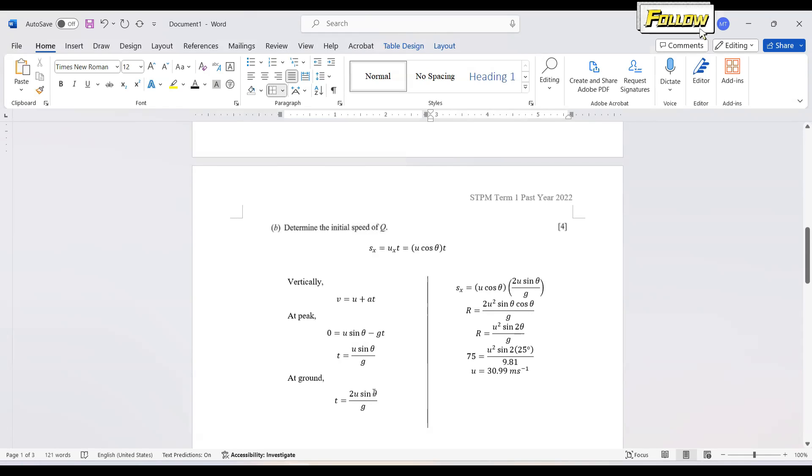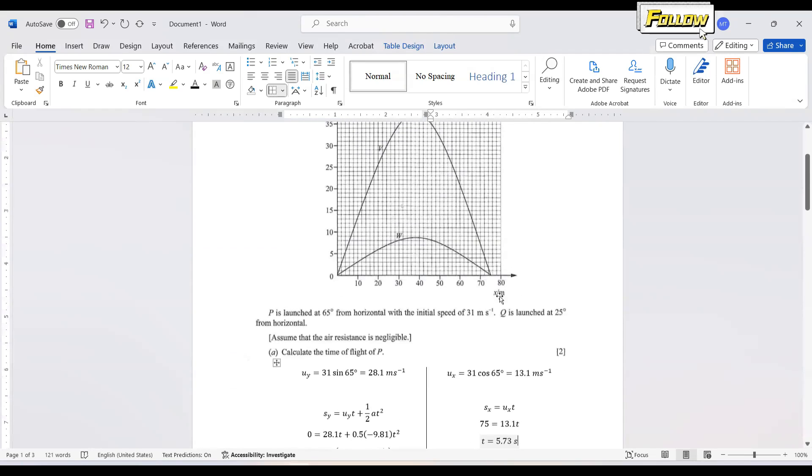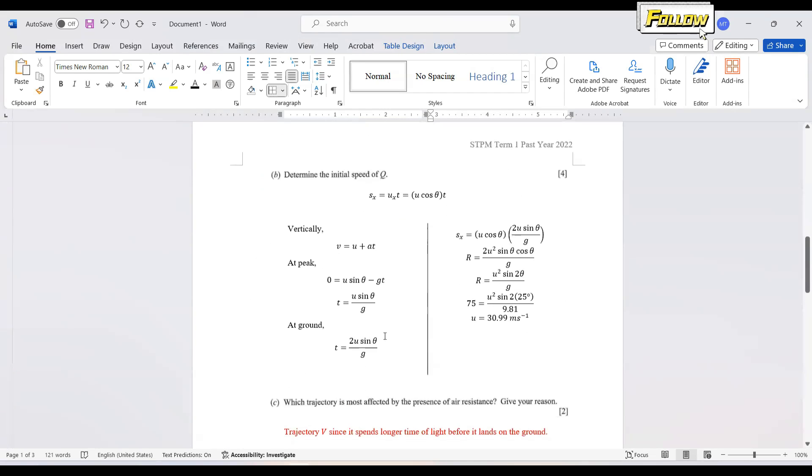So we shall replace the t here because we are going to consider the horizontal distance, 75, where the object landed already. So we shall take the expression of t equals 2u sin theta over g, put it into the equations and do the simplification. You shall obtain some equation that you're familiar with, you should see this equation before, that the horizontal distance, which is also known as the maximum range, u squared sin 2 theta over g.